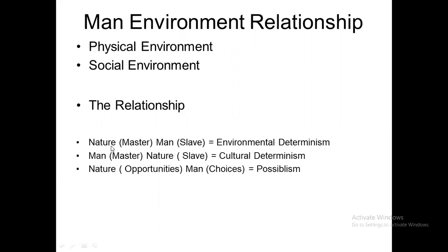In the man-environment relationship there are two variables: nature, which is the physical environment, and mankind, which refers to human beings. If nature or the physical environment is considered the master and man is considered the slave or product of nature, this idea is called Environmental Determinism — the physical environment determines human activities.